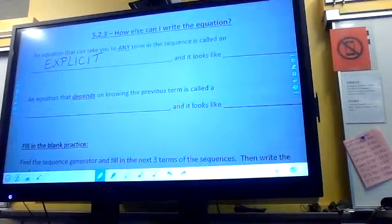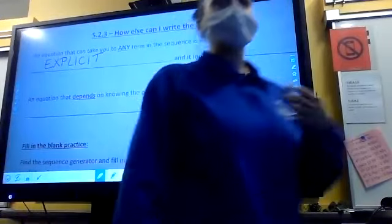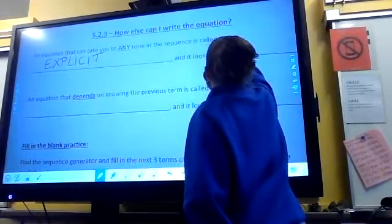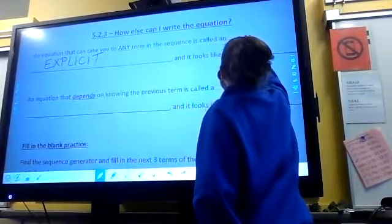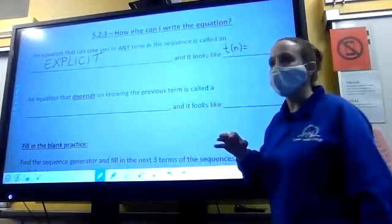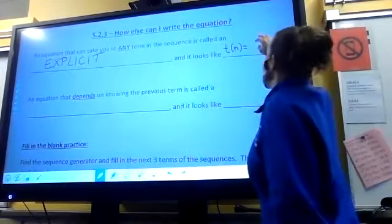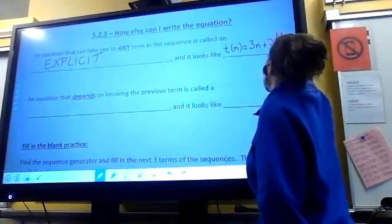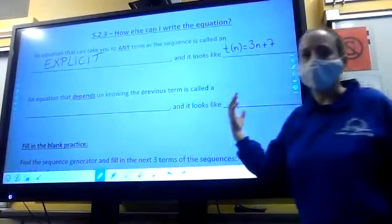It's known as an explicit equation. And I'm going to tell you what it looks like. You know two different types of sequences, arithmetic and geometric. So for arithmetic, here is what it looks like. T of n, and I'm going to use numbers. I'm not going to write it out in words.